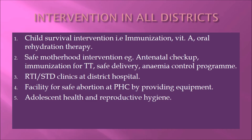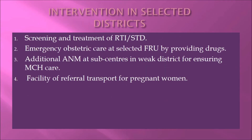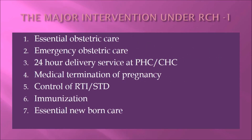Interventions in selected districts included: facility for safe abortion at primary health centers by providing equipment and reproductive hygiene; screening and treatment of reproductive tract infections and sexually transmitted diseases; emergency obstetric care at selected first referral units by providing drugs; and additional ANMs at sub-centers in weak districts for ensuring maternal and child health care, including referral transport for pregnant women.